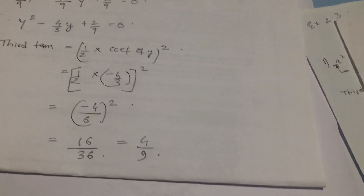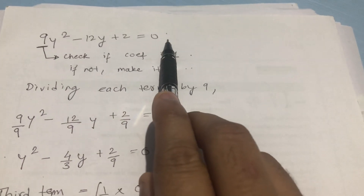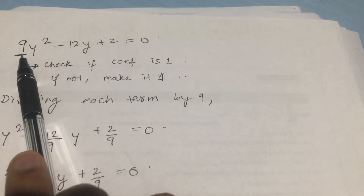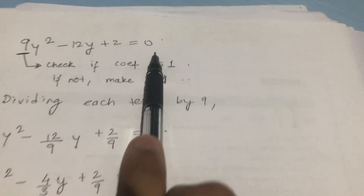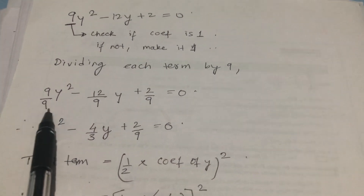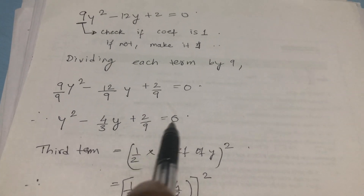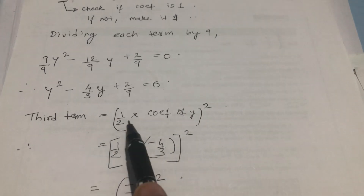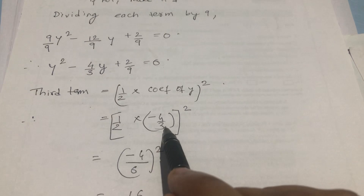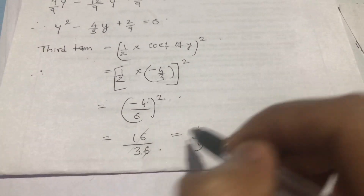Let us move to the next one, which is a bit tough — please pay attention. The question is 9y² - 12y + 2 = 0. As mentioned, we check if the coefficient is 1 — it is not 1, so we make it 1 by dividing each term by 9. Dividing each term by 9 gives y² - (4/3)y + 2/9 = 0. The third term is half into coefficient of y, the whole square: half into (-4/3), the whole square, which simplifies to 4/9.